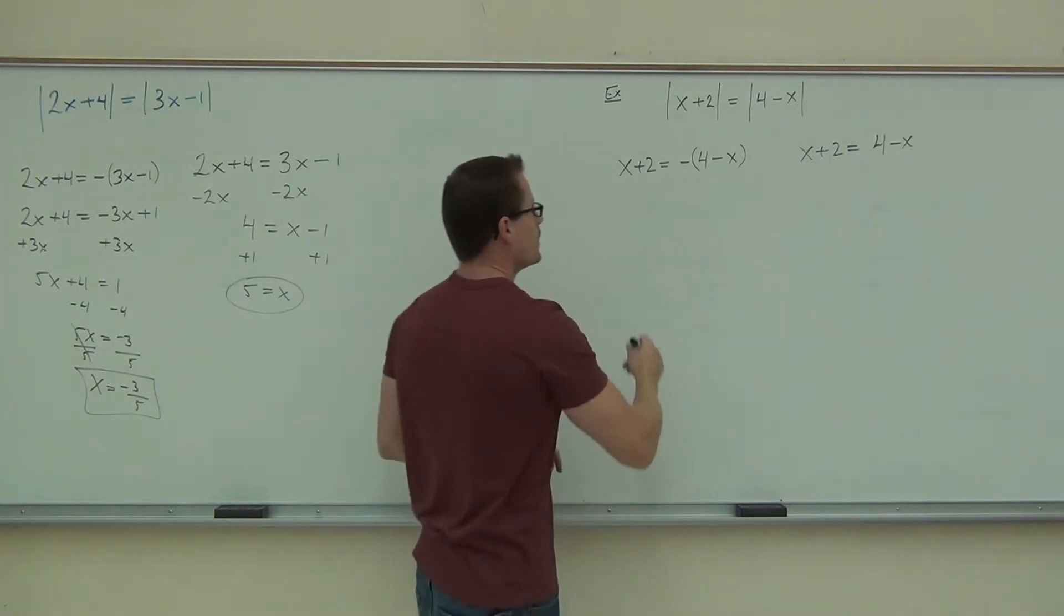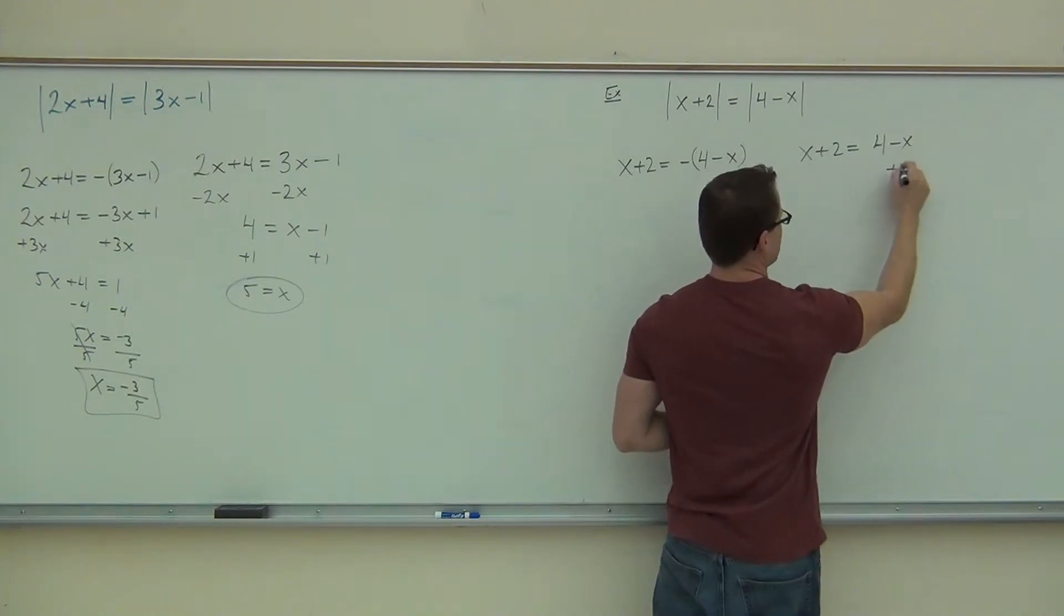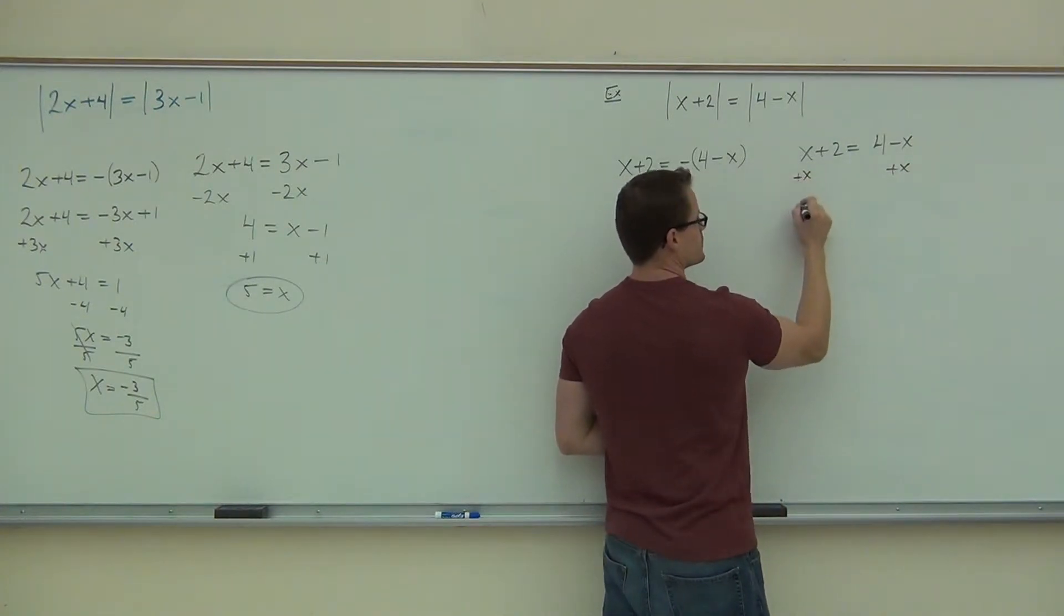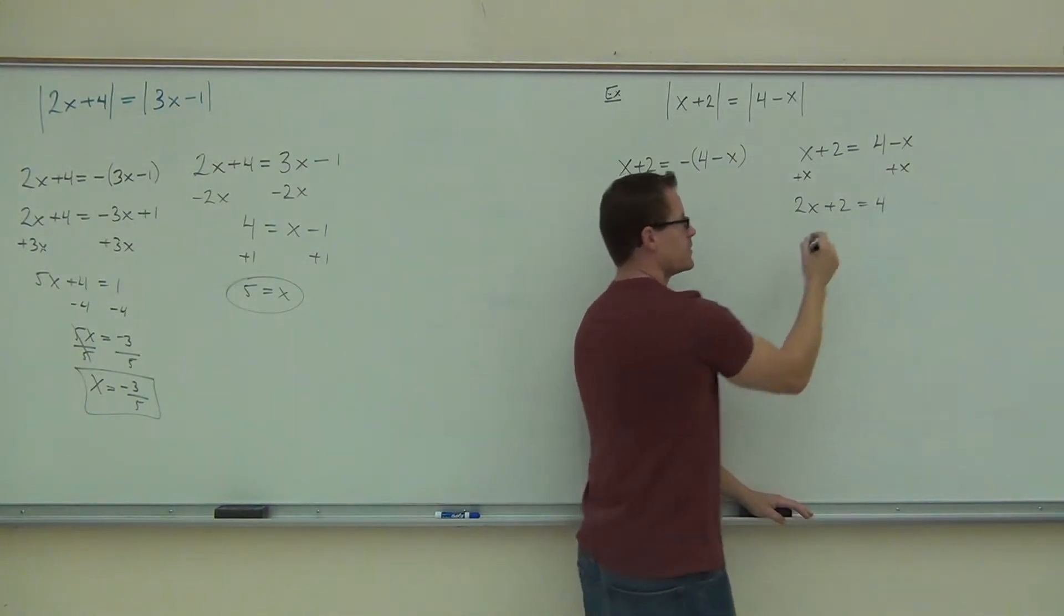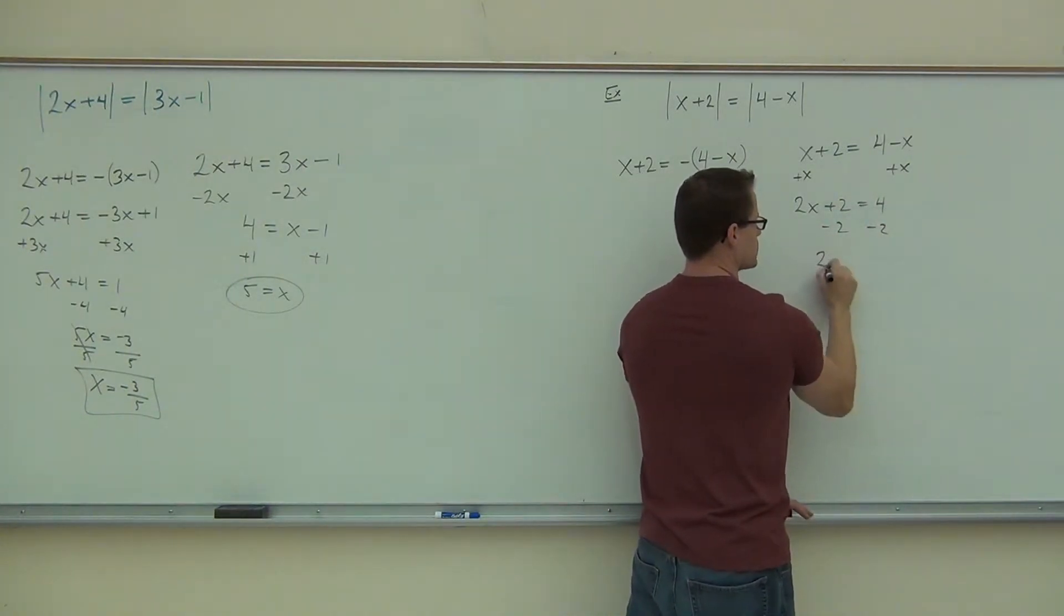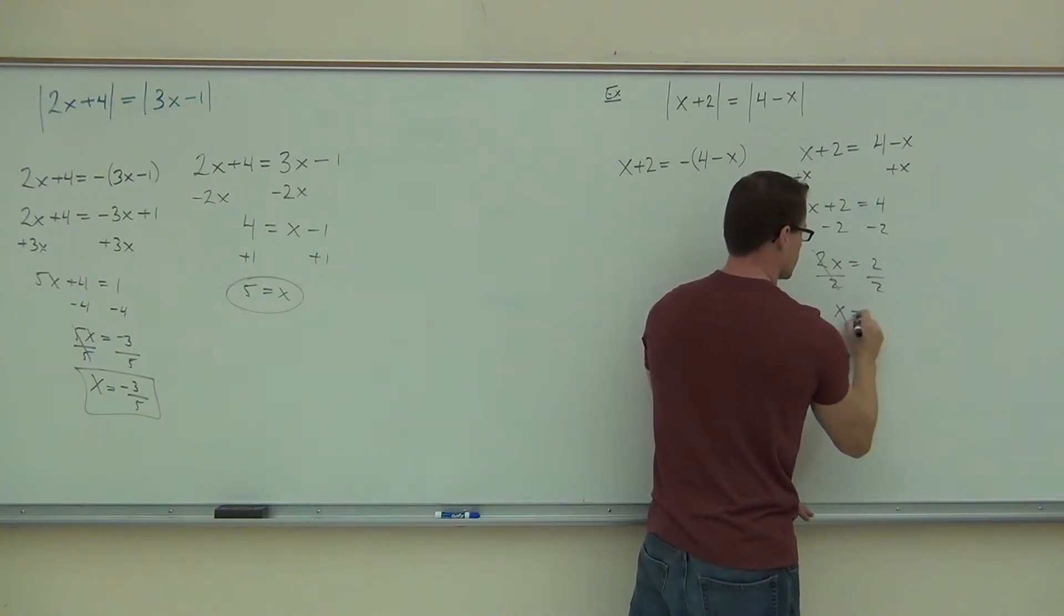On this case, we'll have add x to both sides. Notice we're adding x. We get two x plus two equals four. Are you with me still so far? We subtract two. We get two x equals two. We divide by two. And we get x equals one.